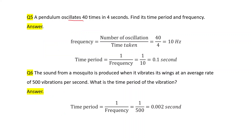A pendulum oscillates 40 times in four seconds. Find its time period and frequency. First, calculating frequency: frequency is the number of oscillations in one second. Formula: number of oscillations divided by time taken — that is 40 divided by 4 — we get 10 Hz.